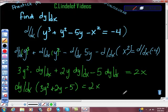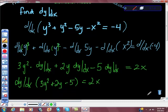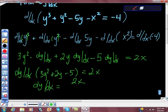Remember, our goal here is to find out what dy/dx is. So we're almost there, aren't we? We're going to divide both sides by this piece right here, and we're going to get dy/dx is equal to 2x all over 3y squared plus 2y minus 5. And that's our derivative, implicit derivative.